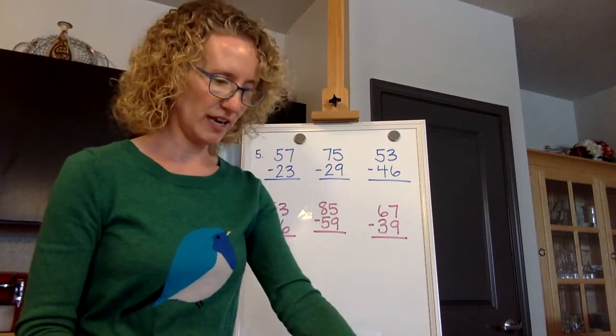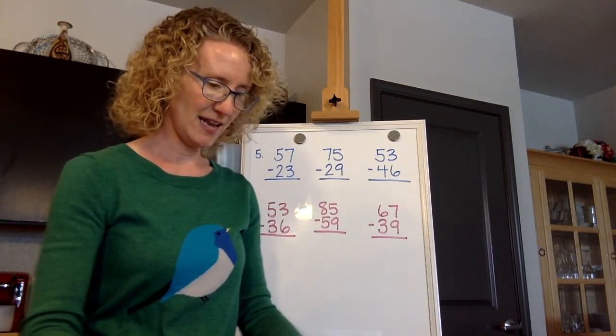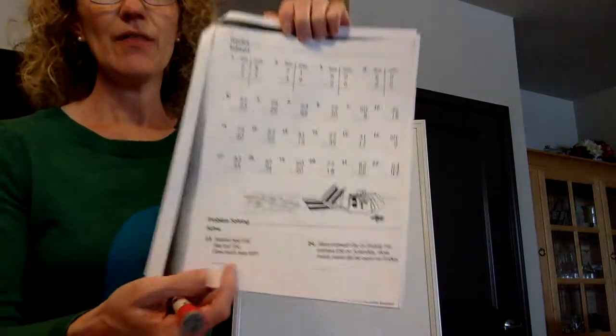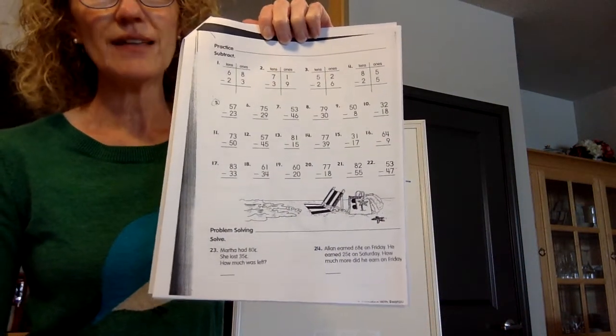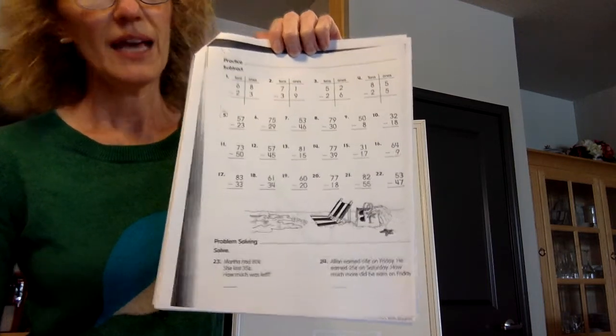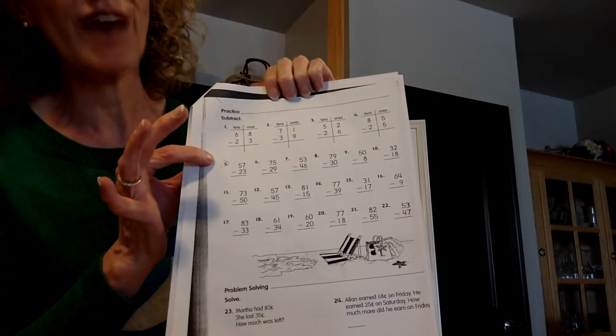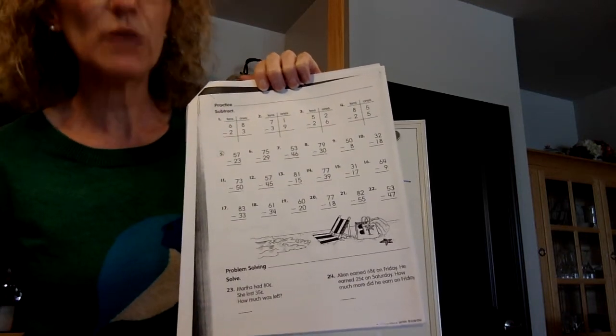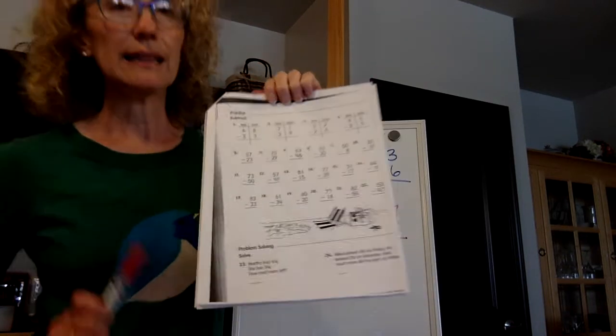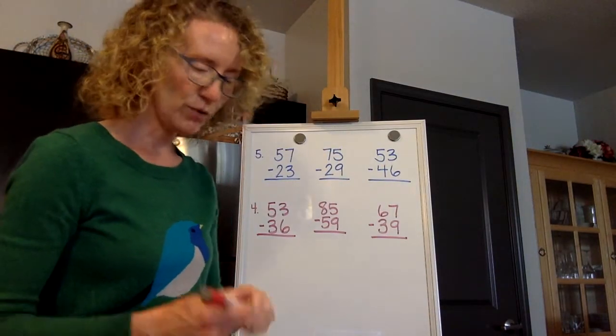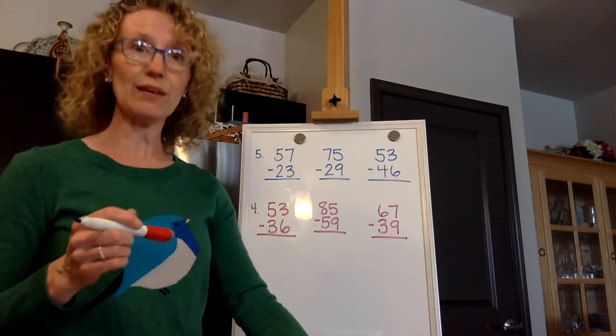So we are starting on the page that looks like this, the one that has the beach chair down at the bottom. We're going to start with number five. We're going to do it together and I want you to do it with me with the steps that I'm doing and listen to the words that I'm saying, because I think if you do that you'll understand better. This is a new thing that we're doing.